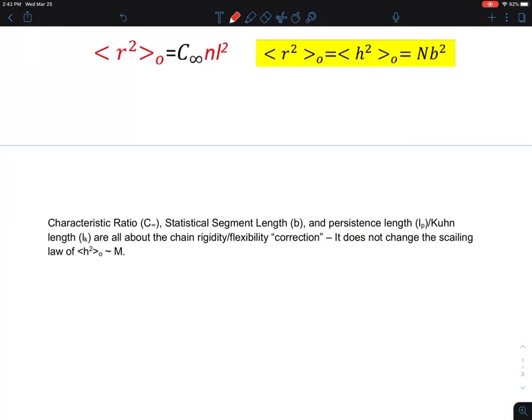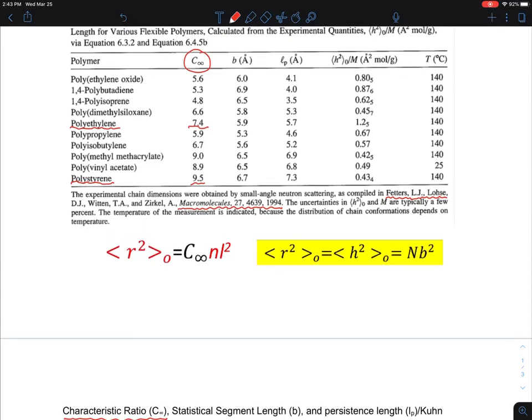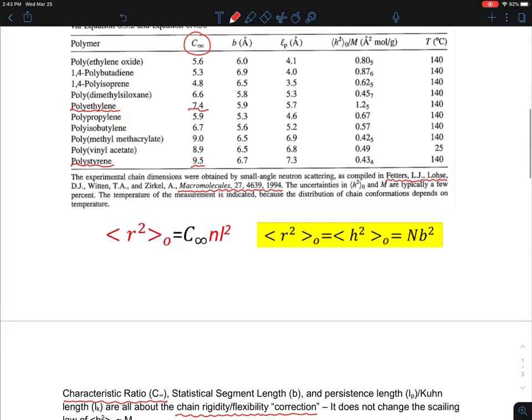So characteristic ratio is essentially an important statement. It's about chain rigidity correction for each polymer, but it will not change the scaling law. And one of the scaling laws people like to use is the end-to-end distance vector squared. This is what is called the RMS, root mean square end-to-end distance. And that is proportional to number of bonds. That is certainly proportional to the molar mass of the polymers. So this relationship does not change as we go.